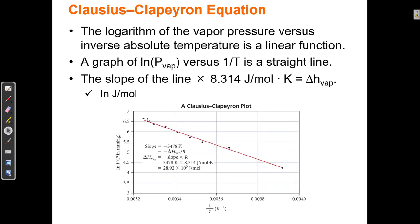If I only go from one point to another and have only two points, the line would have a slightly different slope — this could overestimate or underestimate the slope. But I can use two points to calculate delta H_vap, the heat of vaporization. It's better to use lots of points to get a better representation of the line. But if all I have are two points, I can use the two-point equation.